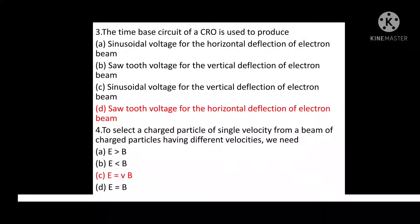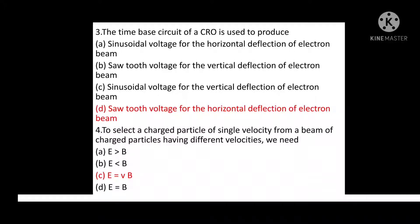Question No. 3: The Time Base Circuit of a CRO is used to produce? Option A: Sinusoidal Voltage for the Horizontal Deflection of Electron Beam. Option B: Sawtooth Voltage for the Vertical Deflection of Electron Beam. Option C: Sinusoidal Voltage for the Vertical Deflection of Electron Beam. Option D: Sawtooth Voltage for the Horizontal Deflection of Electron Beam. Correct answer is Option D: Sawtooth Voltage for the Horizontal Deflection of Electron Beam.